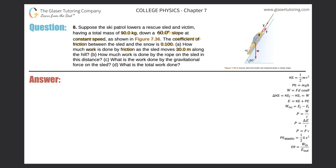The question asks how much work is done by friction. Looking at the picture, since we're dealing with frictional forces, we want to relate work to force using this formula: the work due to friction equals the force due to friction multiplied by the distance traveled, multiplied by the cosine of the angle between the friction force vector and the displacement vector.